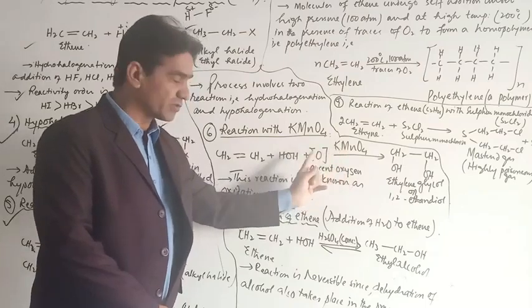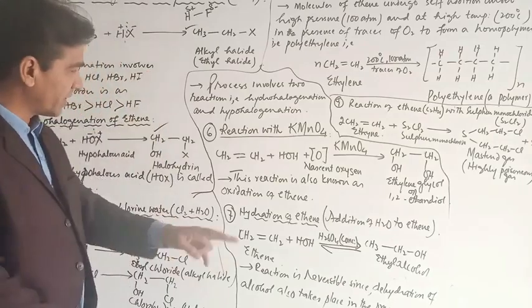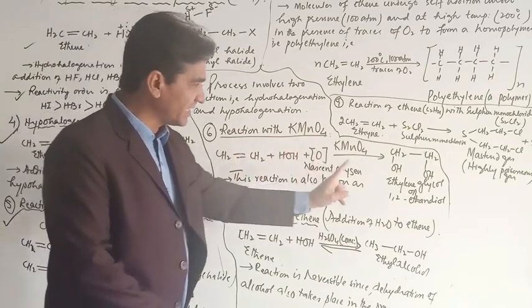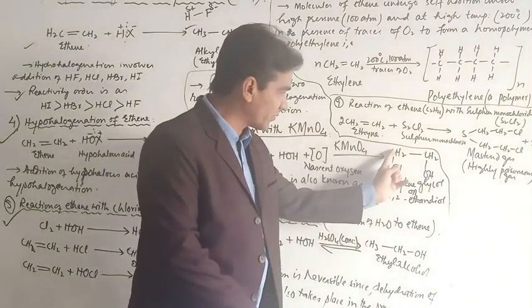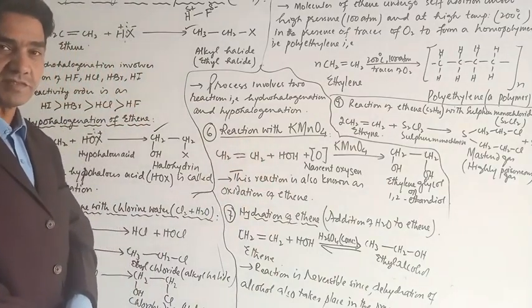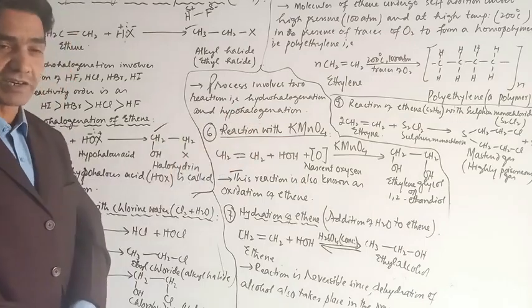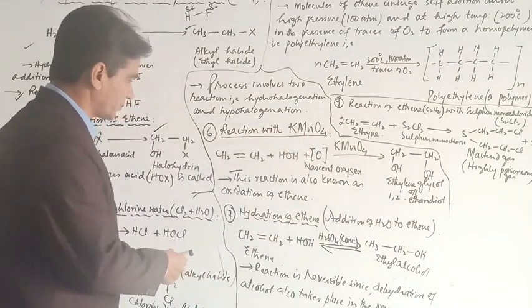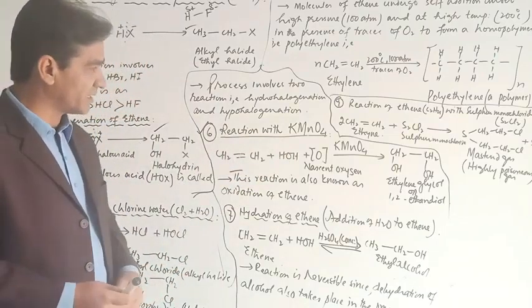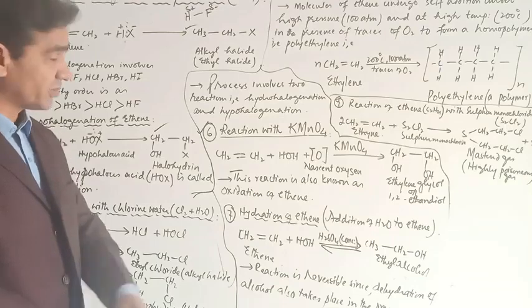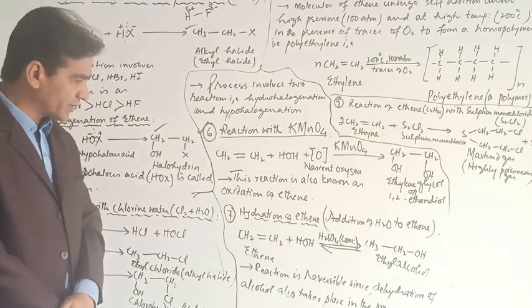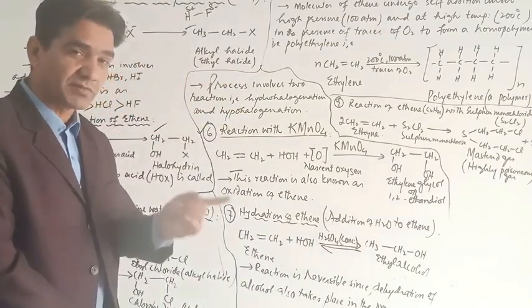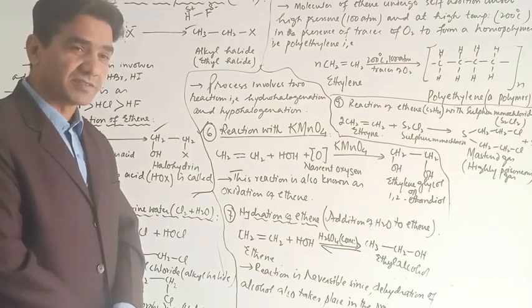KMnO4 will produce nascent oxygen which will first interact with water to produce two hydroxyl groups, and both hydroxyl groups will be added — each one on each carbon. The product is ethylene glycol, also known as ethane-1,2-diol or 1,2-dihydroxy ethane. Alkenes can be converted into diols — ethene has been converted into ethylene glycol by the action of KMnO4.